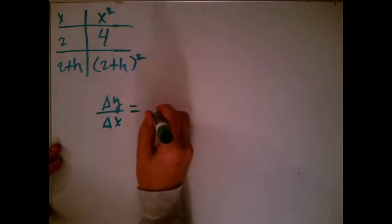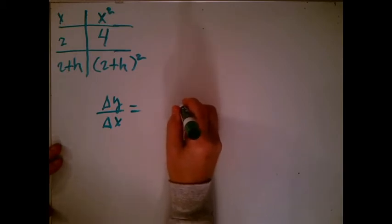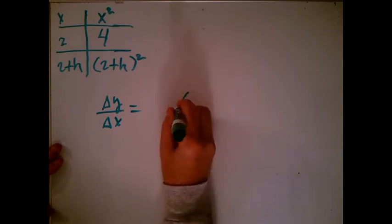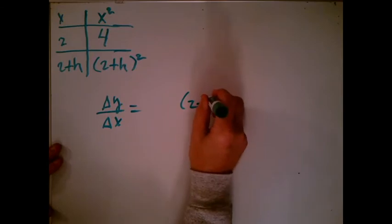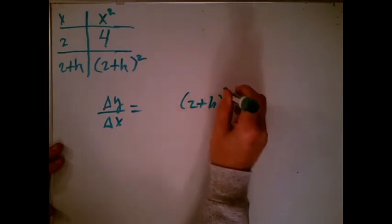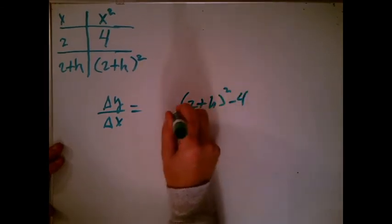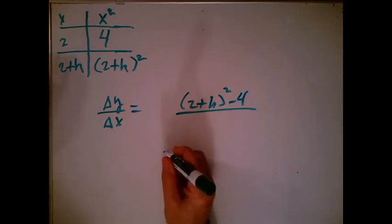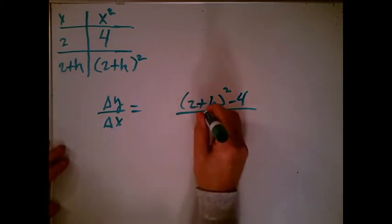I'm going to write the change in the y's, that's going to be (2 plus h) squared minus 4, all over the change in the x's. Well that's 2 plus h minus 2, so that's just h.